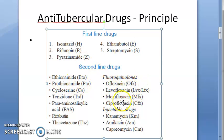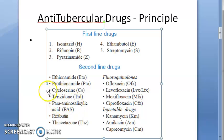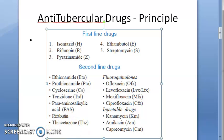Second line drugs include fluoroquinolones, amikacin (an aminoglycoside, similar to streptomycin and gentamicin), ethionamide, protionamide, cycloserine, terizidone, para-aminosalicylic acid, rifabutin, and thiacetazone. You can remember fluoroquinolones, amikacin, and cycloserine as key examples.